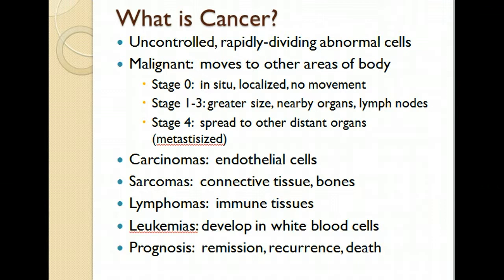Carcinomas are cancers of epithelial-type cells. Sarcomas occur in connective tissues and bones. Lymphomas — such as Hodgkin's or non-Hodgkin's lymphoma — happen in immune tissues. Leukemias develop in white blood cells. With all cancers, there is a prognosis. Cancer can go into remission, where there is no current sign of disease, but unfortunately cancers can recur. Many stage 4 cancers do not have long-term survival rates.